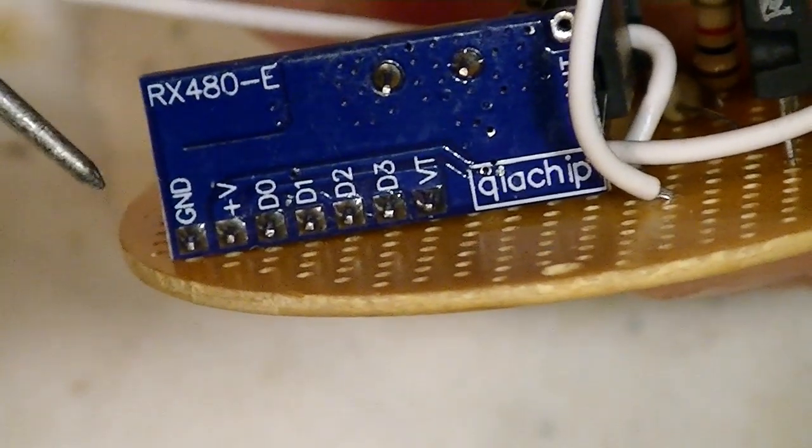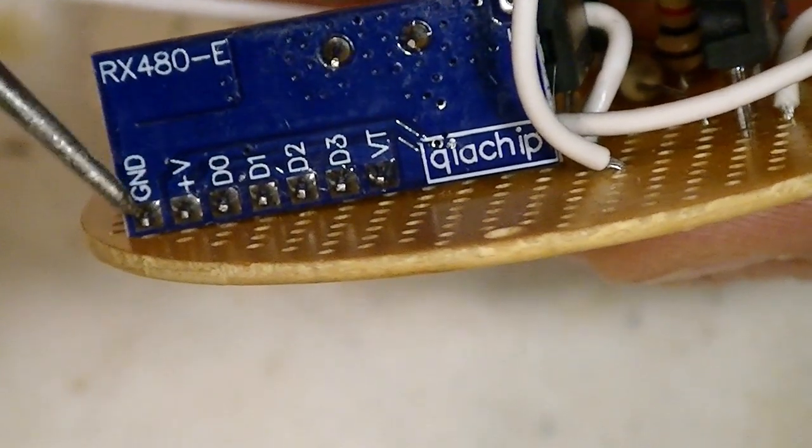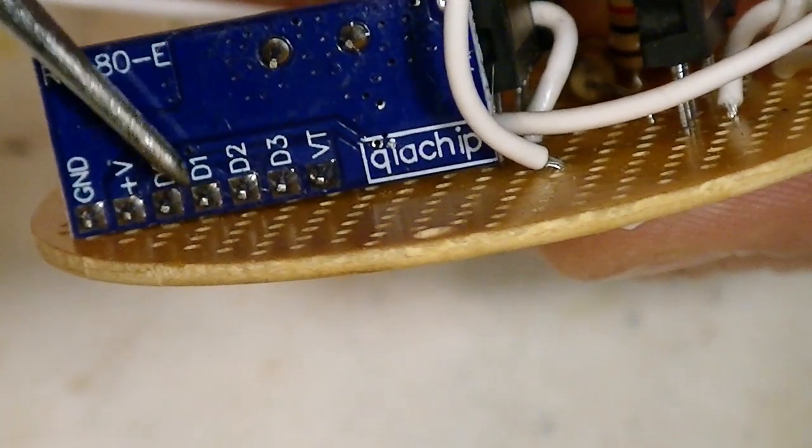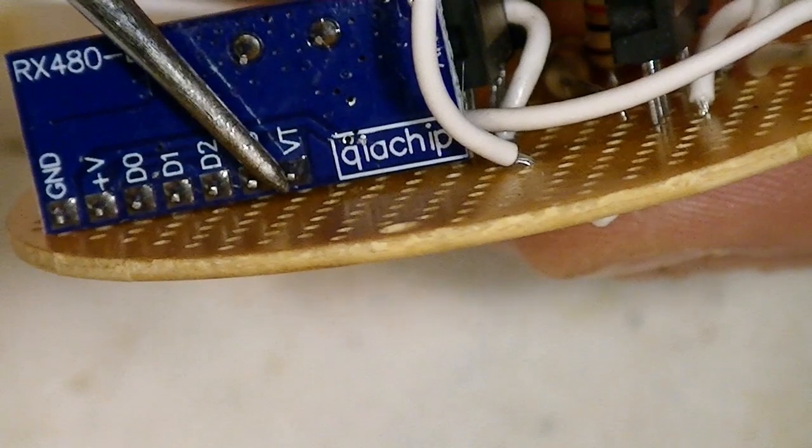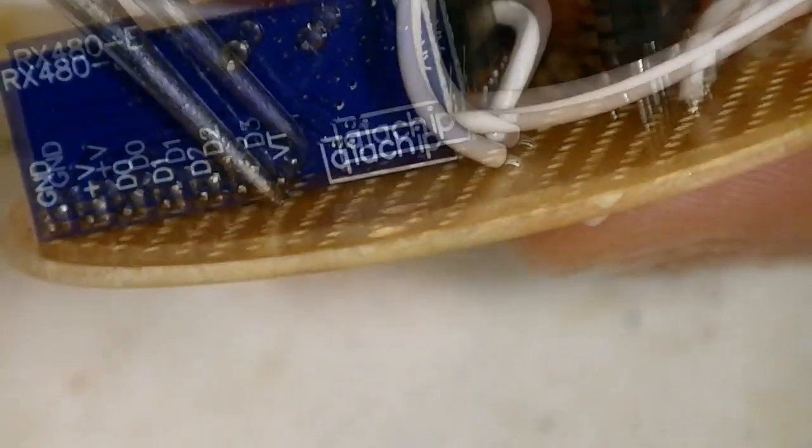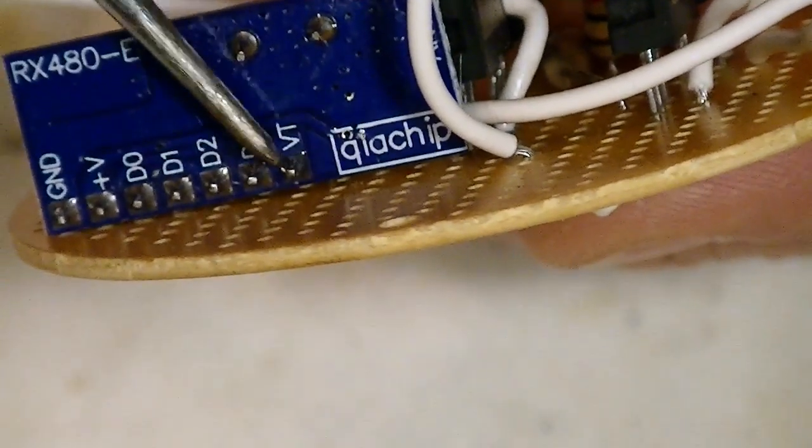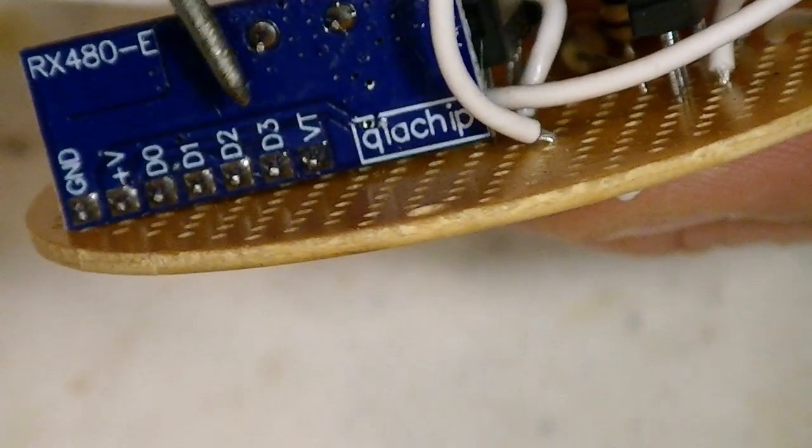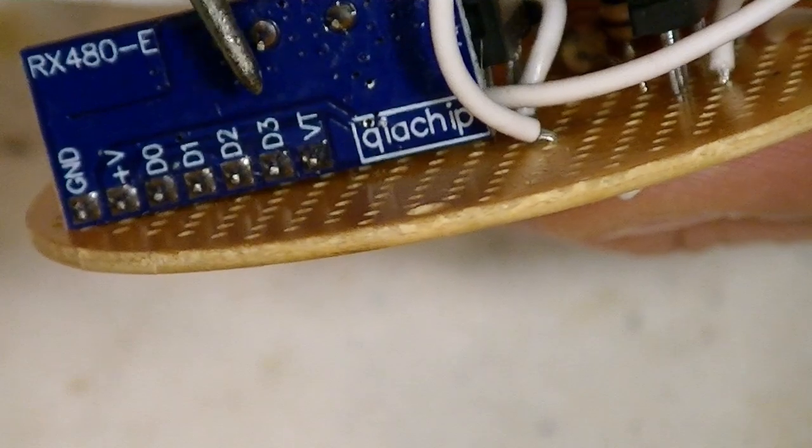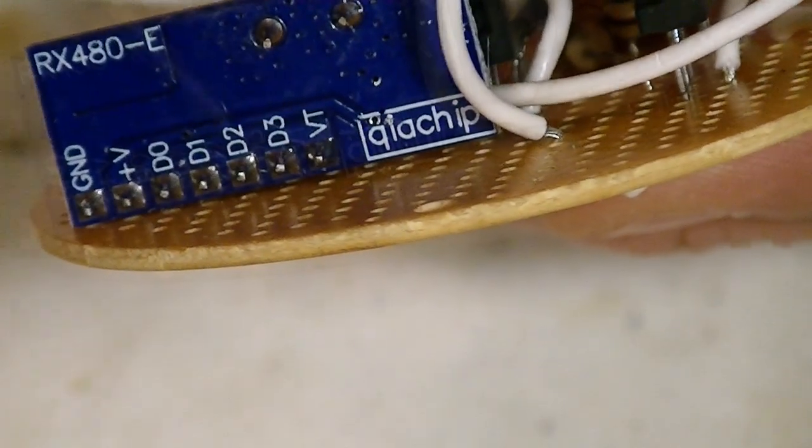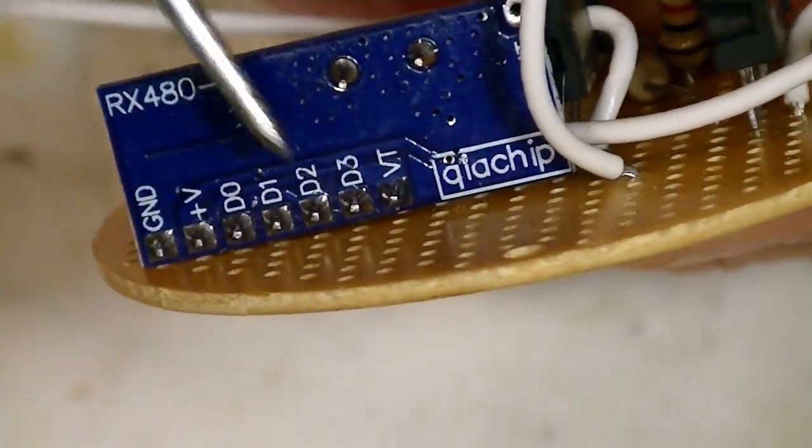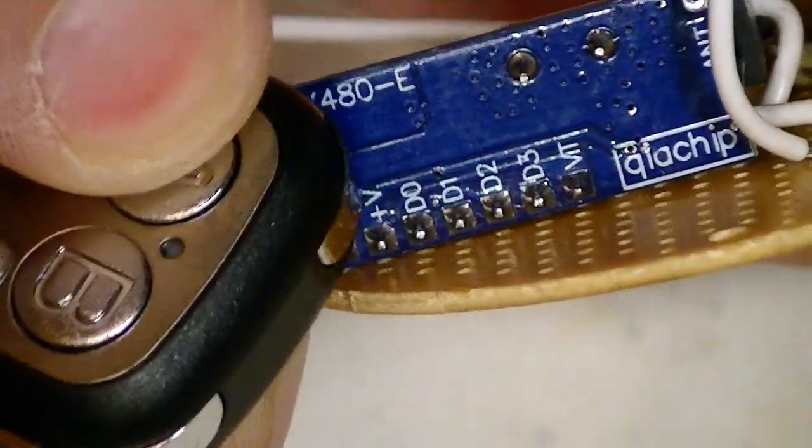So the pins on this thing, you're going to have your positive and ground here to power it. You're going to have D0, D1, D2, D3, and this is the antenna. So connect the wire for an antenna to this. And then when you push down the A button, it's going to make this one go to positive. When you let up, it's going to go to negative or nothing. And these are just going high and low depending on pushing these.